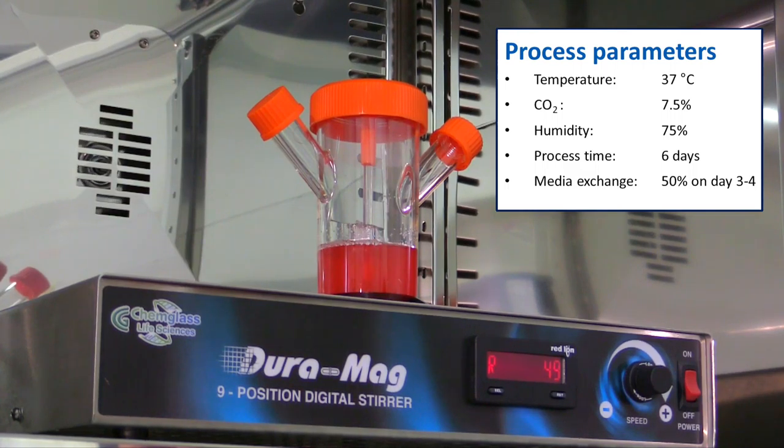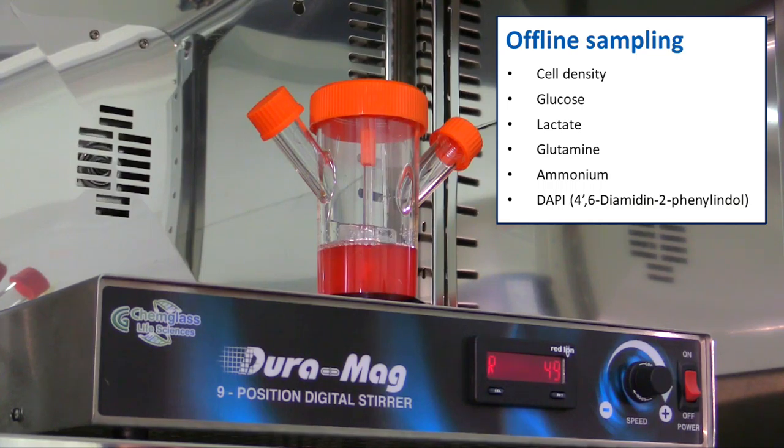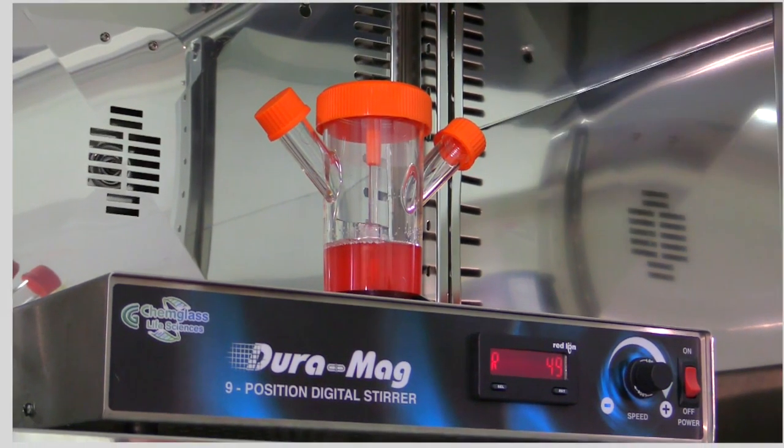When around 2 times 10 to the power of 4 cells per square centimeter are reached, 50% of the culture medium has to be replaced. This is usually between day 3 and 4. Furthermore, it is recommended that offline samples for determination of cell density, concentration of glucose, lactate, glutamine and ammonia, as well as for DAPI staining, are taken daily.